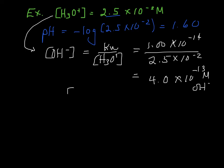And we'll get 4.0 times 10 to the minus 13 molar OH-. So anytime you know H+ or hydronium ion, you can find OH- and vice versa. So you notice that the hydronium ion concentration is bigger than the hydroxide ion concentration. And that tells us our solution is acidic. We already knew that because the pH was so low.